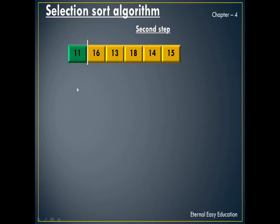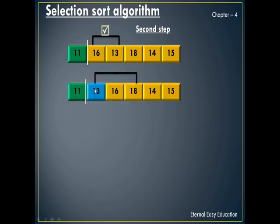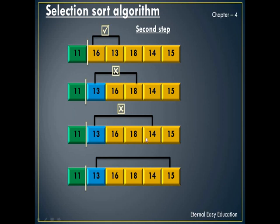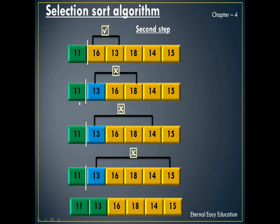Now the first element is sorted, so we start from the second element at index 1. 16 is compared with 13 — 13 is less, so swap. Next, this 13 at the second position is compared with 18 — 13 is less, no swapping. Again 13 is compared with 14 — 13 is less, no swapping. Again 13 is compared with the last element 15 — 13 is less, so no swap. Now the first and second elements are sorted.